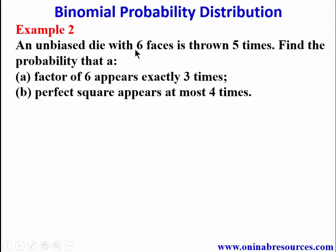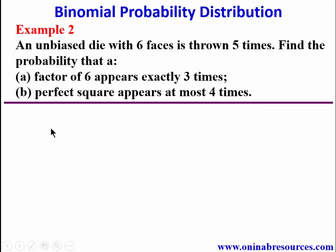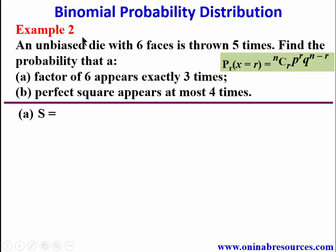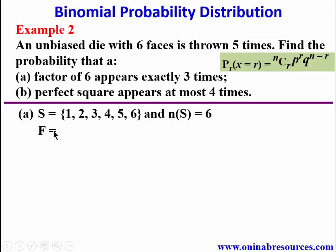Example two: an unbiased die with six faces is thrown five times. Find the probability that a) a factor of six appears exactly three times, and b) a perfect square appears at most four times. We treat a and b separately since the events differ. For part a, the sample space is {1, 2, 3, 4, 5, 6}, n(S) = 6. The factors of six are {1, 2, 3, 6}, so n(F) = 4.